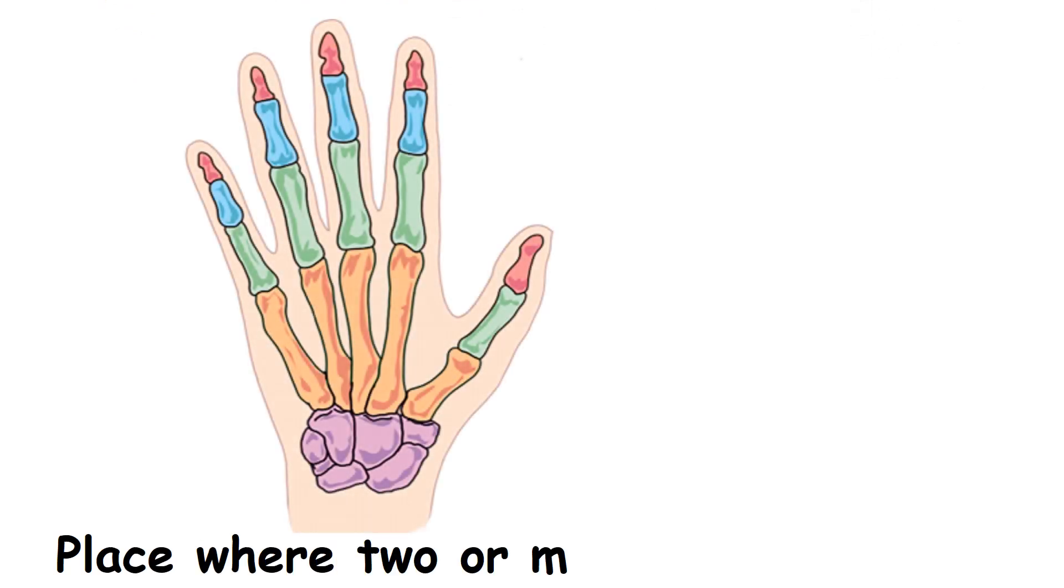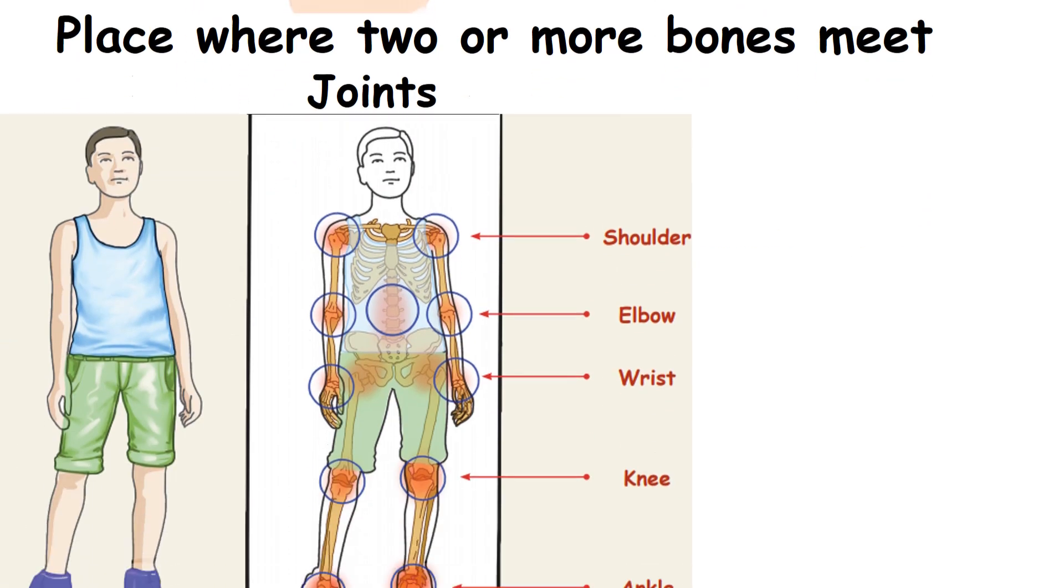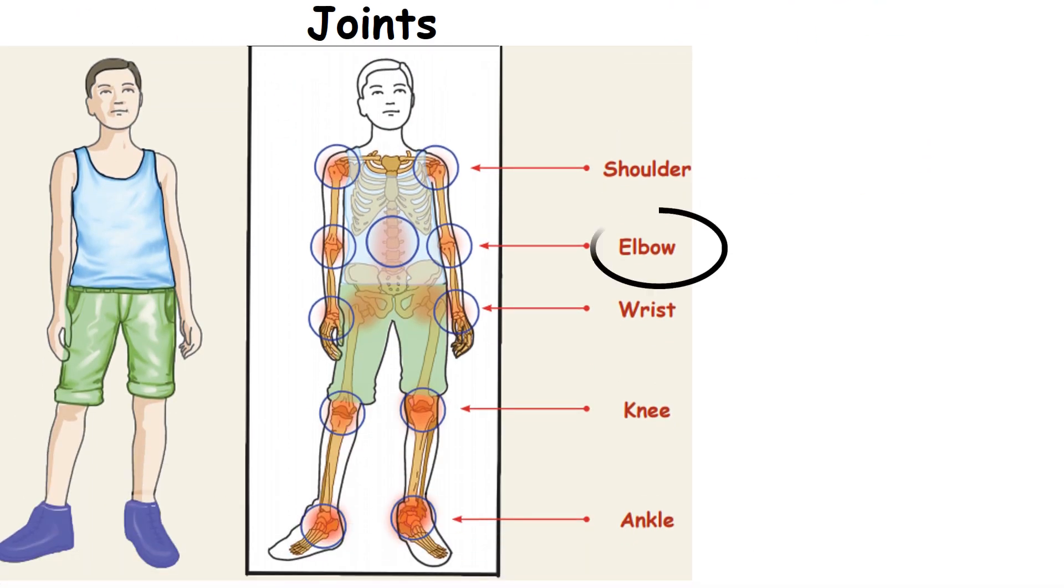The place where two or more bones meet is called a joint. Shoulder, elbow, wrist, knee, ankle are examples for joints.